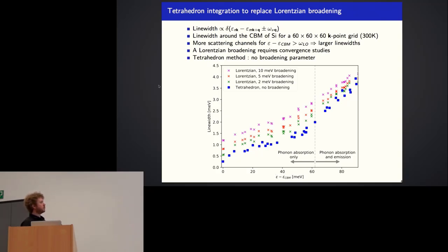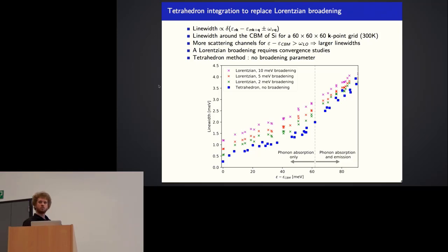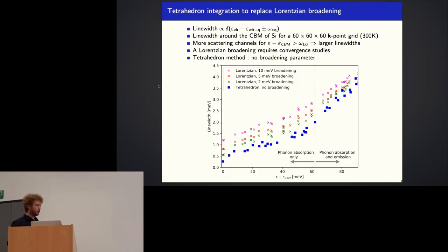To avoid this convergence study, we have implemented the tetrahedron integration method so that we can integrate the delta directly without introducing a broadening parameter. The result in blue directly gives the correct behavior, corresponding to what would be obtained with zero broadening using a Lorentzian peak. We no longer have to perform this convergence study, which is a big gain in time.